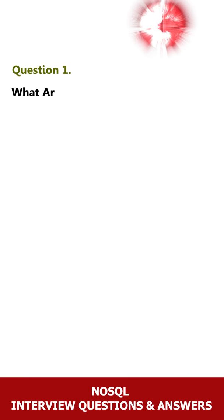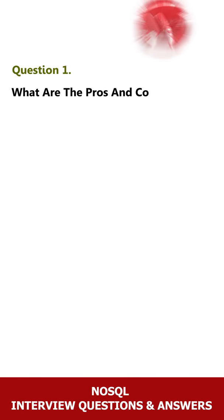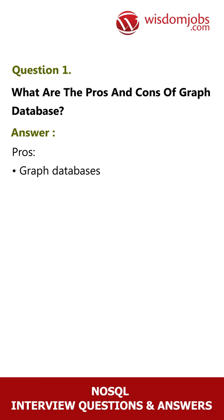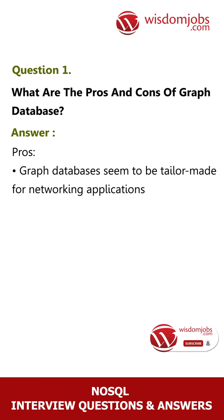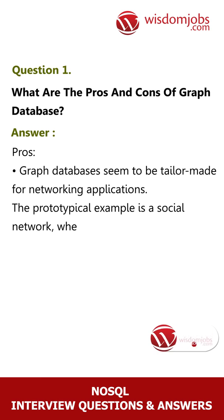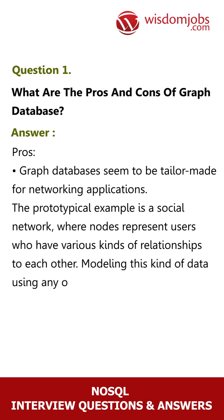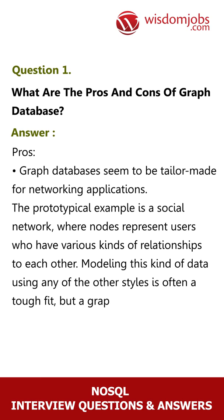Question 1: What are the pros and cons of graph databases? Answer - Pros: Graph databases seem to be tailor-made for networking applications. The prototypical example is a social network where nodes represent users who have various kinds of relationships to each other. Modeling this kind of data using any of the other styles is often a tough fit.